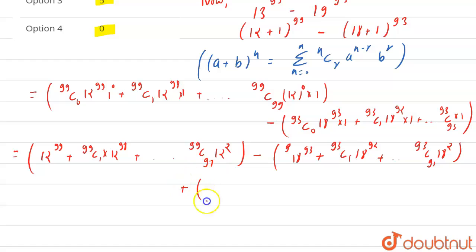So you can see that we can also write it as 12 power 99 plus 99 C 1 times 12 power 98, and now the term remaining are 99 C 98 times 12 plus the last term will be 1, minus 18 power 93 plus 93 C 1 times 18 power 92, minus 1.